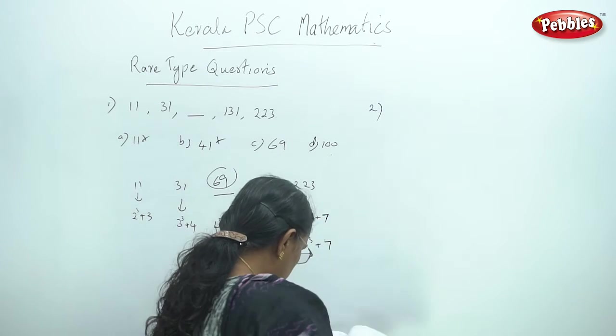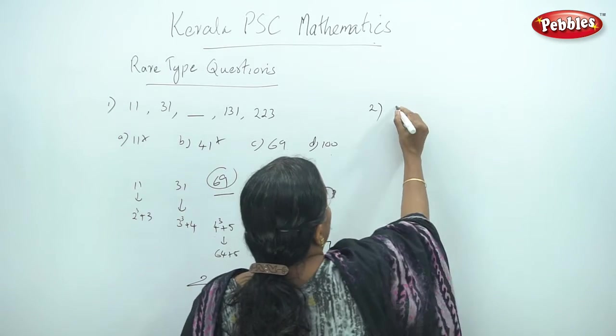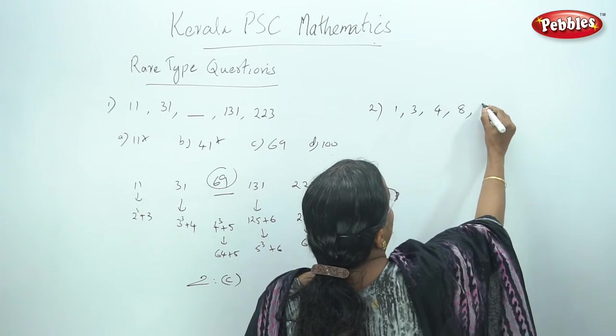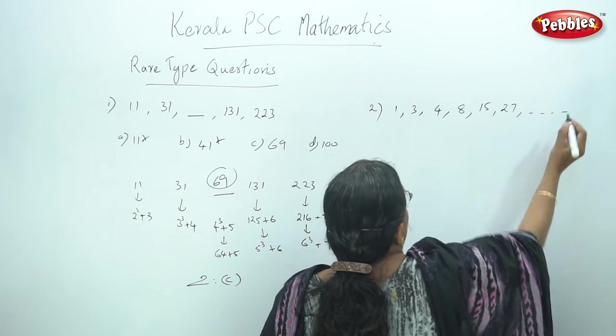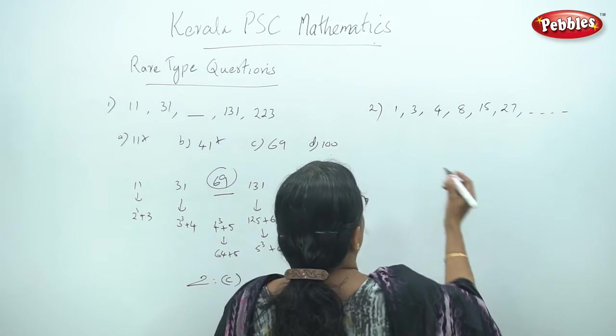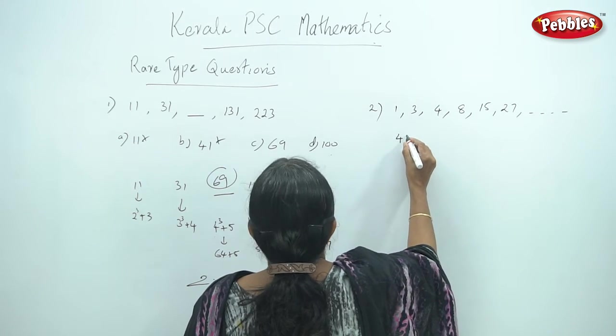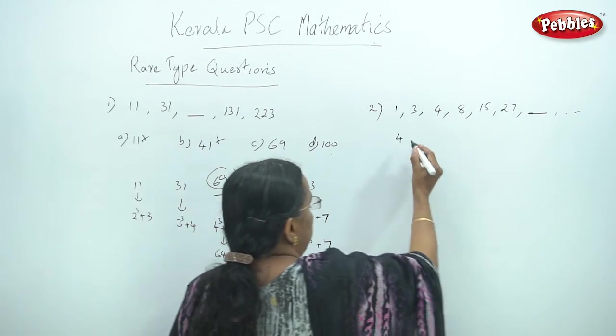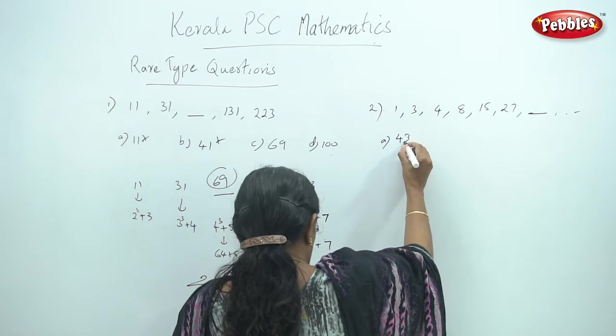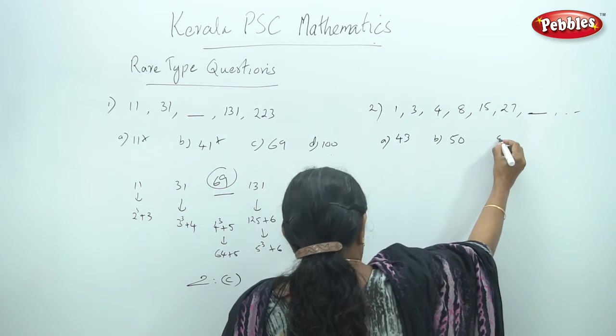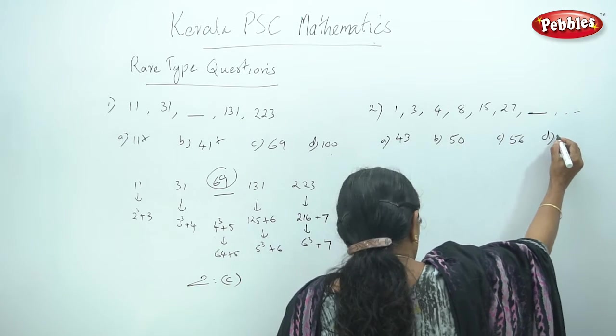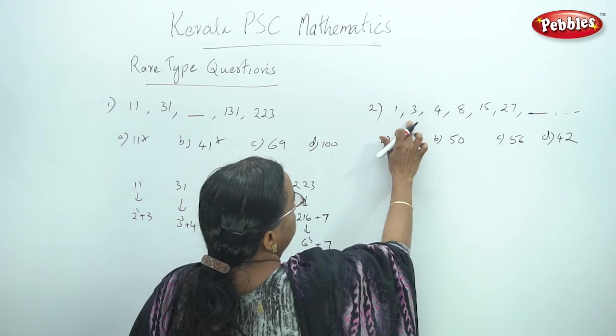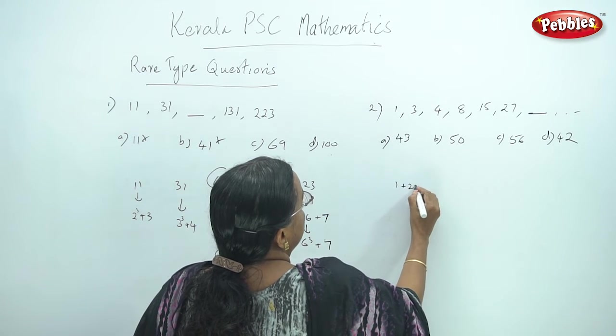Now here we go. I will ask you a question. The series is: 1, 3, 4, 8, 15, 208. That is 43. If we have to write the next number, the options are: A is 43, B is 80, C is 86, D is 42. These are the options. Now we have a relationship. 1 plus 2 is 3.